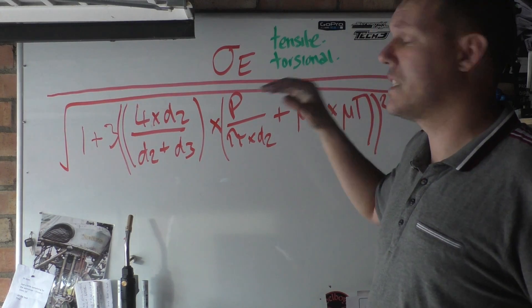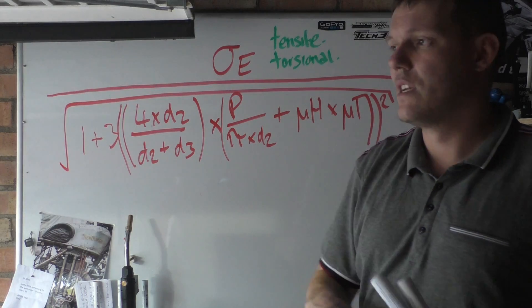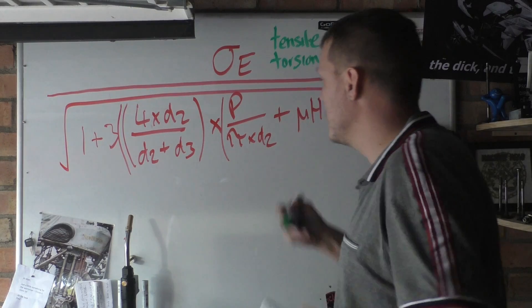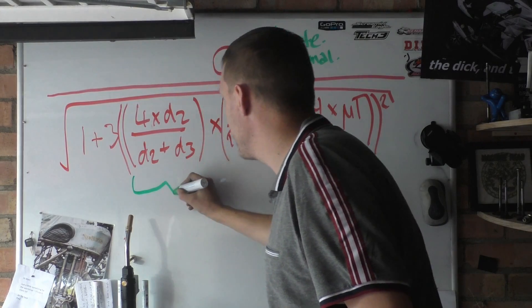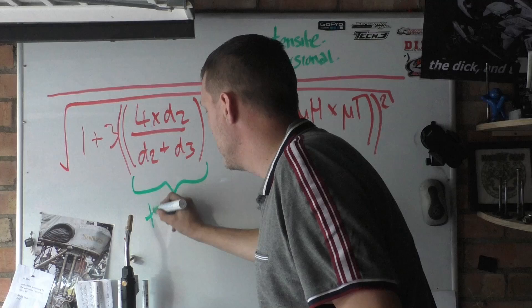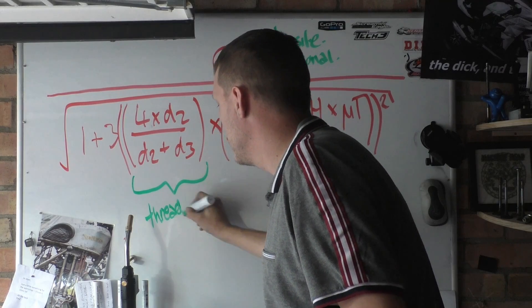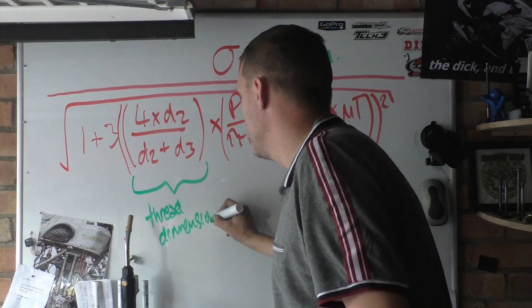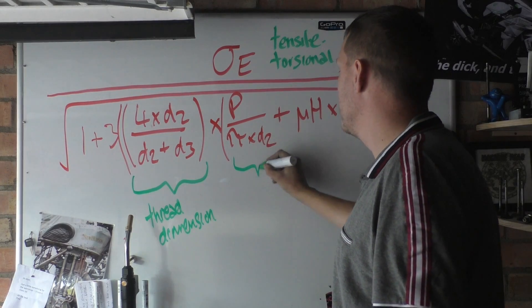And we have to divide this, spread this out over our helix. So this is where all this comes in. Basically, these are the thread dimensions. This section here is our helix.